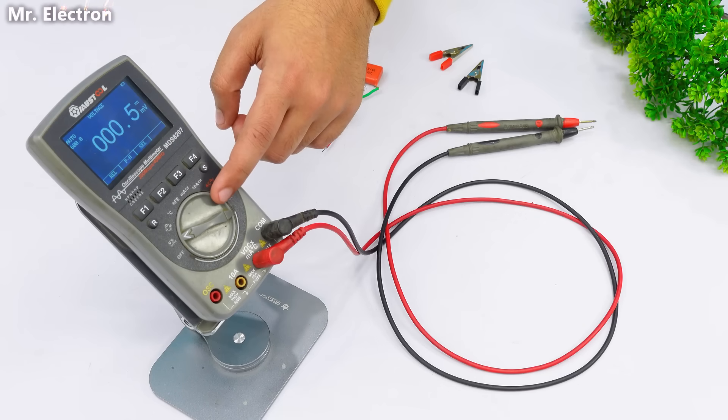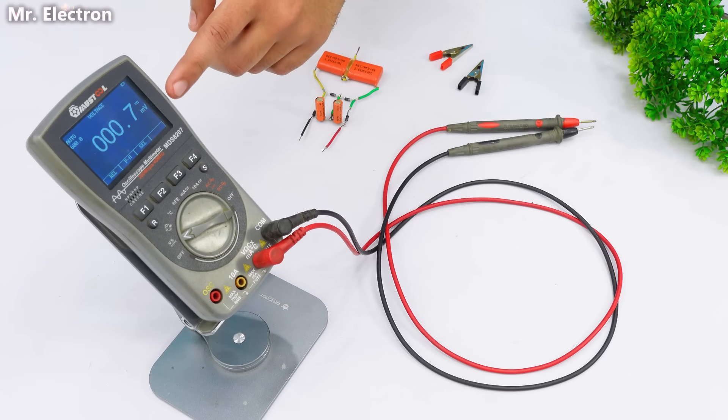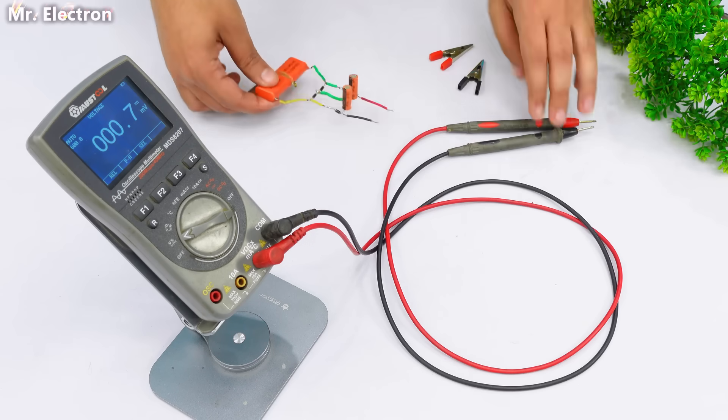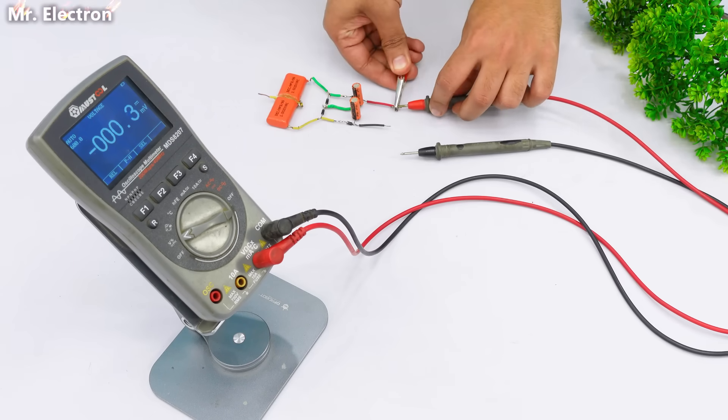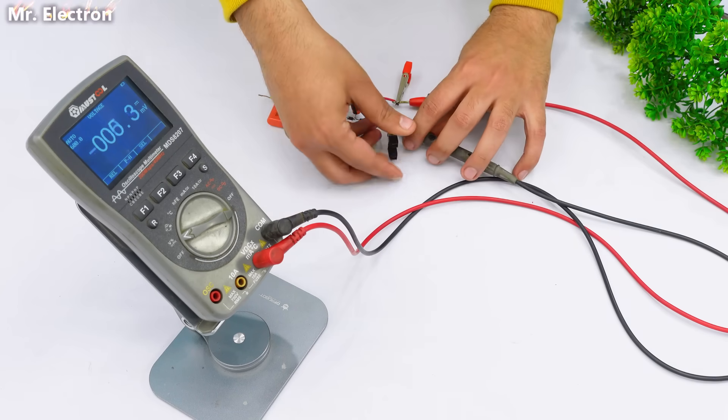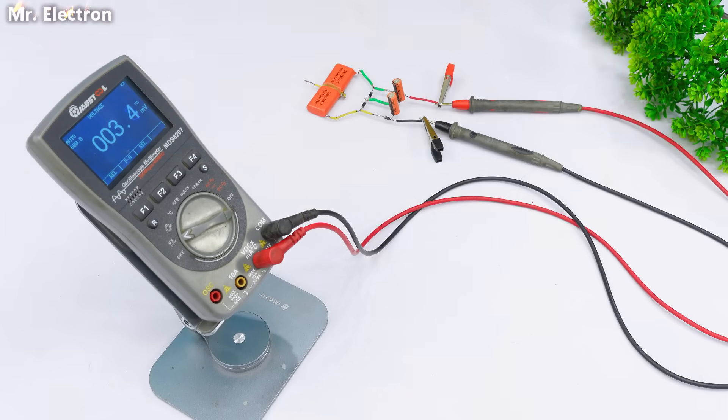Here you can see that I've pointed the multimeter at DC voltage measurement mode and it is at zero. Now I'm going to connect this circuit to my meter pinouts. Red is positive and black negative. You can see that the voltage is increasing little by little and there is no power source given.